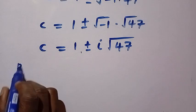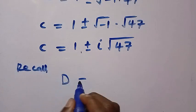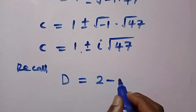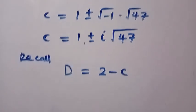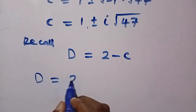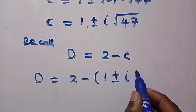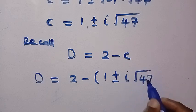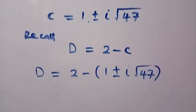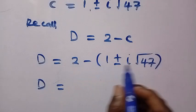To get D, we have to recall from D equals 2 minus C. By replacing C, we have D equals 2 minus 1 plus or minus i square root of 47. Here we have the expansion of this.